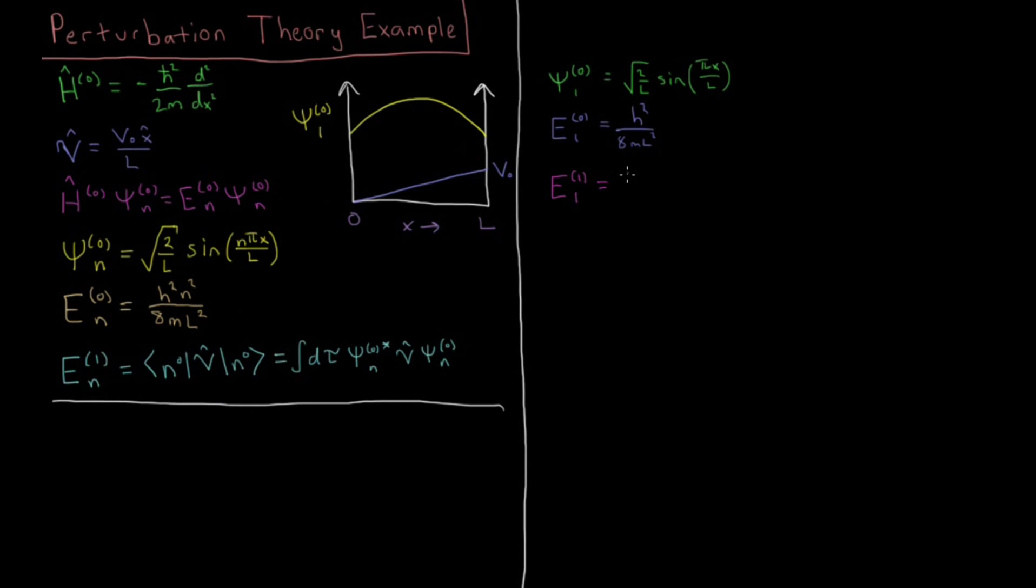So now let's calculate what the first-order correction to this ground state, this n-equals-1 energy, is going to be. That's going to be the integral. The entire space of our wave function is going from 0 to l, and it's just in the dimension x, so we just have dx. Our complex conjugate of our wave function is square root of 2 over l sine pi x over l. Our perturbation operator is v-naught x over l. That's our script v, as opposed to the potential energy operator, which would just be a Roman v. And then our wave function, since this is real, is the same as the complex conjugate, square root of 2 over l sine pi x over l.